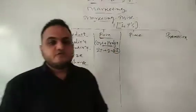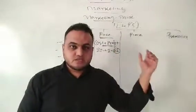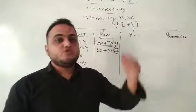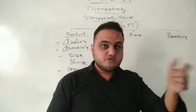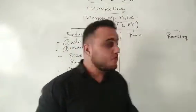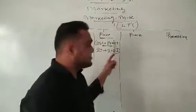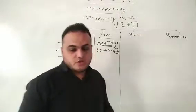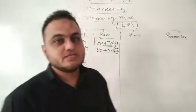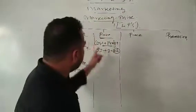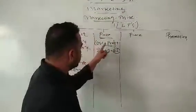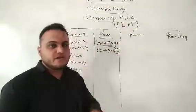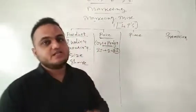If I purchase a product for 20 rupees and need 20 percent profit, then 4 rupees profit will be added, making the price 24 rupees. So the price is decided based on the cost of the product plus the profit to be added.